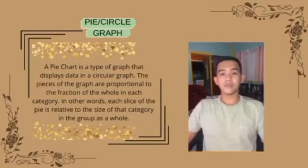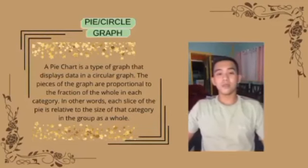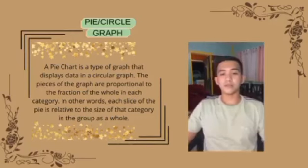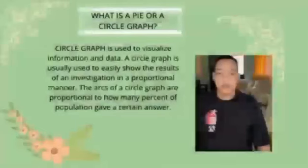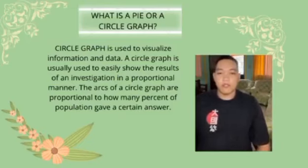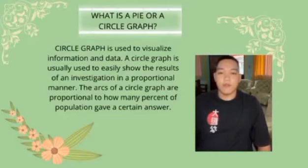A pie chart is a type of graph that displays data in a circular graph. The pieces of the graph are proportional to the fraction of the whole in each category. In other words, each slice of the pie is relative to the size of that category. A circle graph is used to visualize information and data, and is usually used to present the result of an investigation in a proportional manner. The arc of a circle graph corresponds to the percentage that the relation represents.